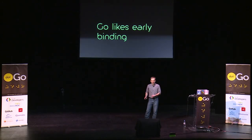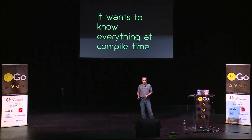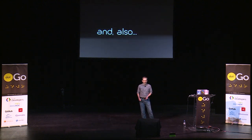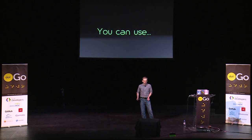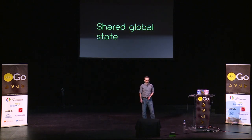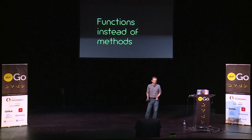Go doesn't like late binding. It's far too static. Go likes early binding — it wants to know everything at compile time. And also, Go is pragmatic. You can use procedural programming. You can use shared global state. You can use functions instead of methods, and so on, if that works for you. Go is opinionated, but it's not dogmatic.